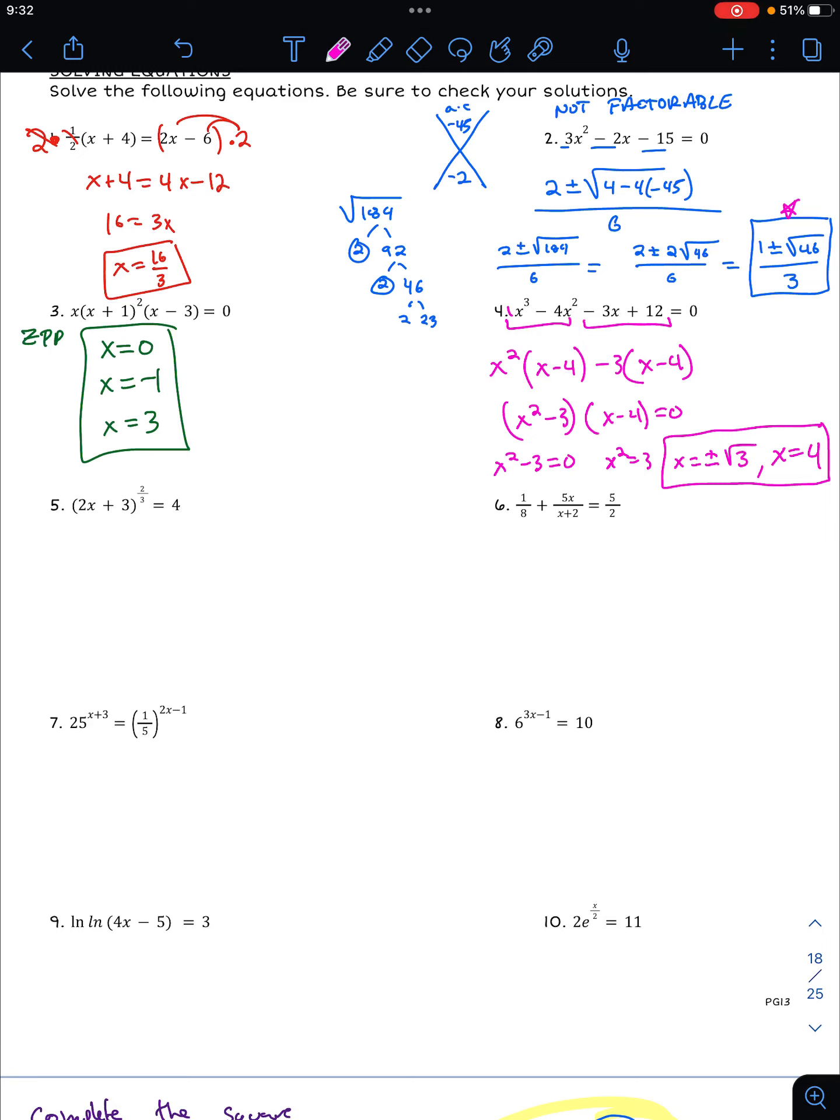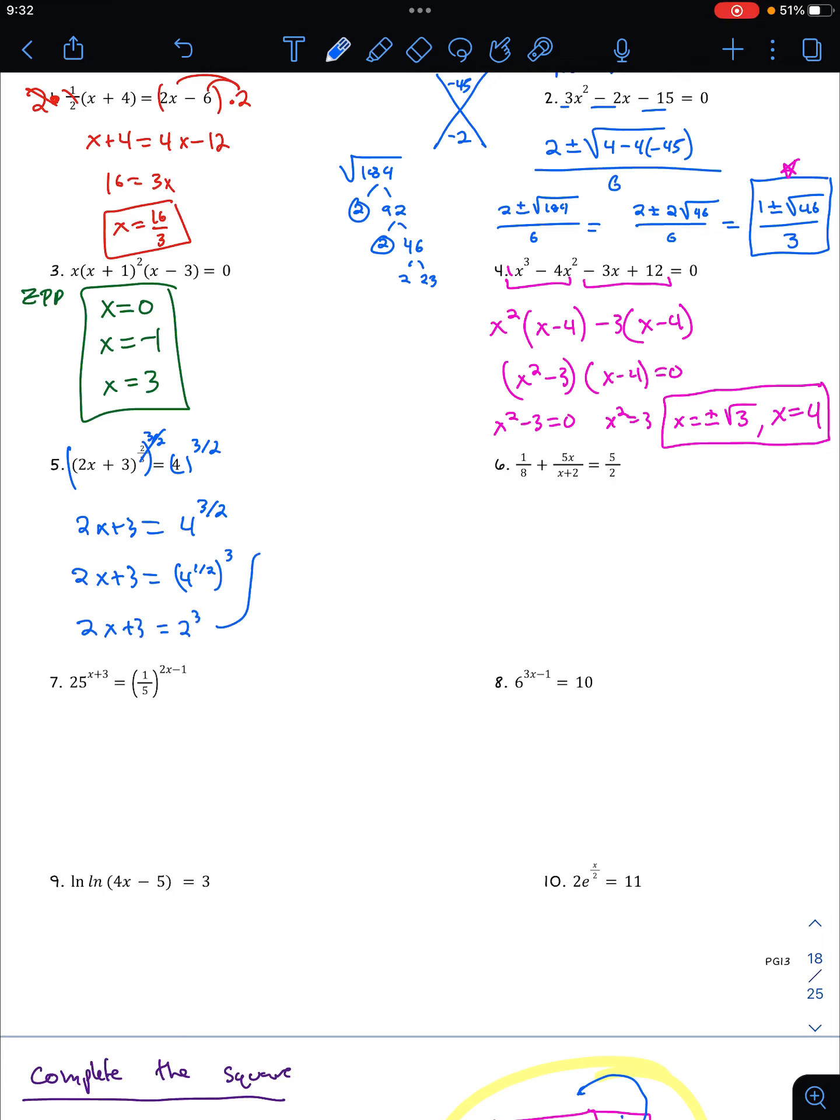All right, next one, we have two x plus three to the two thirds equals four. Number of ways to do this. I'm going to go ahead and just raise all both sides to the three halves power. I'm going to raise this to the three halves power. So this cancels, leaving with two x plus three, and then four to the three halves. Now four to the three halves is just eight. You could think of it as two x plus three equals four to the one half to the third, and four to the one half is the square root. So two to the third, and then we get two x plus three equals eight, two x is five, x is five over two. Yeah, so if you want to deal with the exponent, even if it's a rational exponent, we can just raise it to the reciprocal, and that should take care of things.